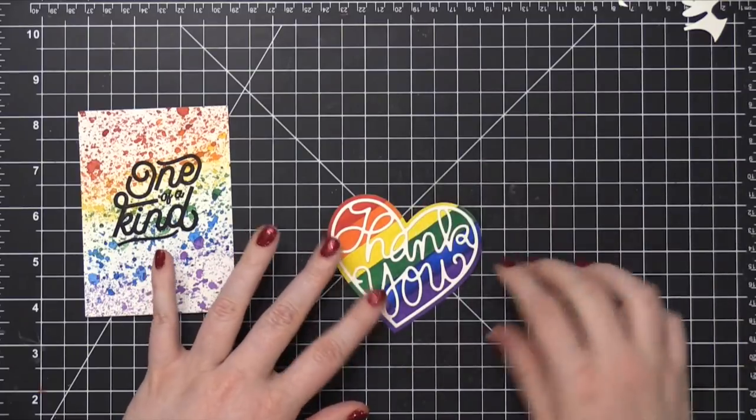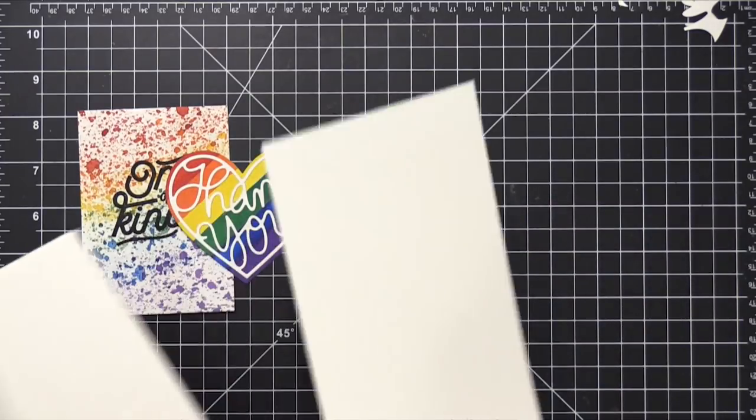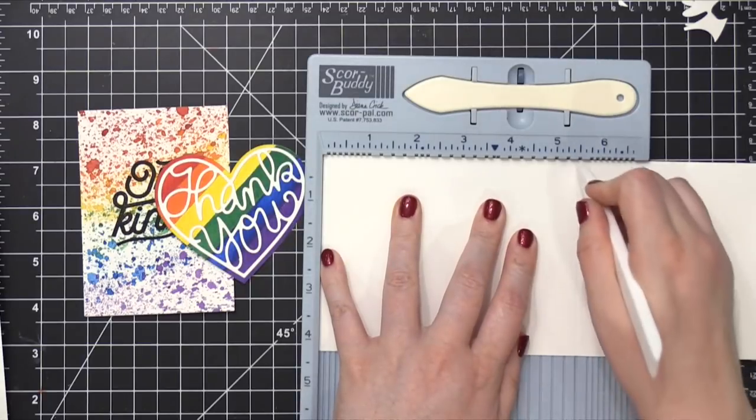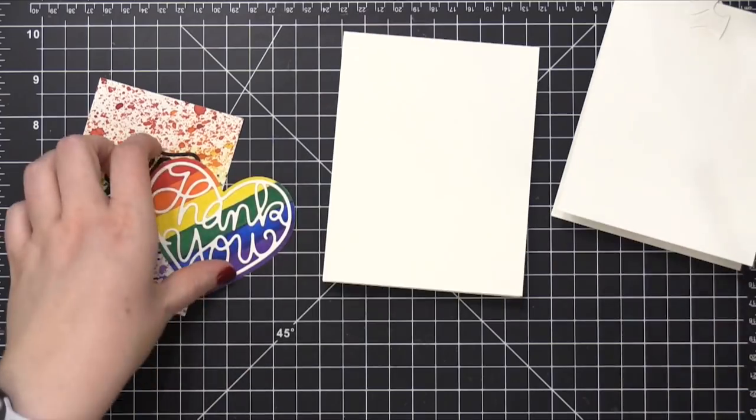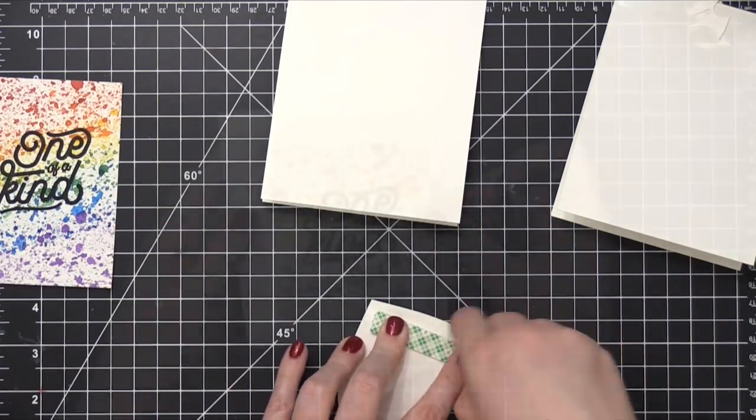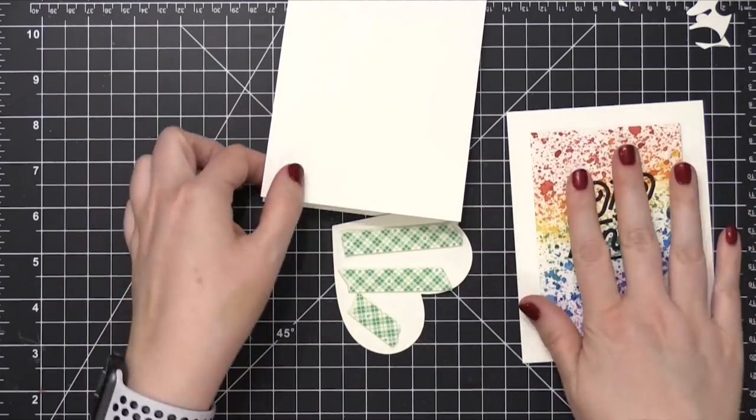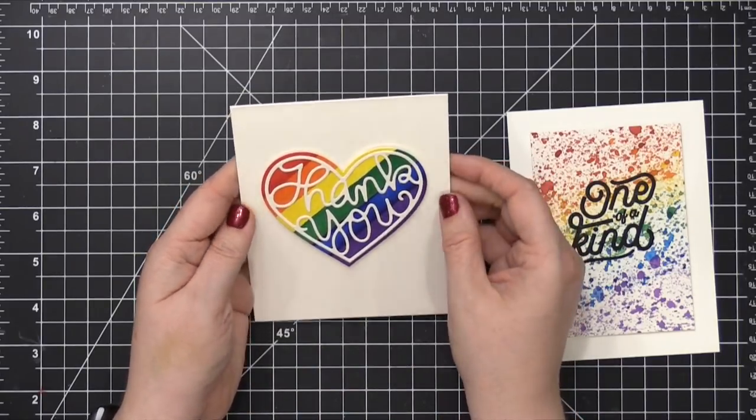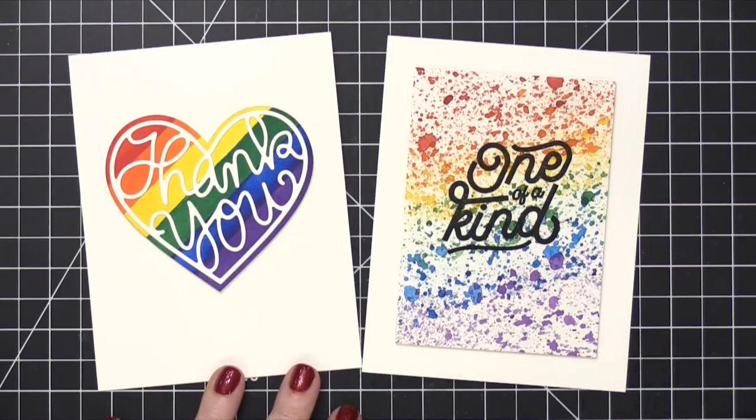The good thing about the Gina K Connect Glue is that it does dry clear. So anything that kind of squishes out should dry clear. I'm going to use white card bases. These are going to be Neenah Classic Crest Solar White 110 pound card bases scoring at five and a half. And then I'm going to use some foam tape to adhere these onto the card bases. And these are going to be really, really simple cards. I'm not doing a whole lot to them. All right, there's one card. And then the other, which is going to be a super simple one. There we go. There are the cards for today. Two very simple watercolor rainbow backgrounds. Hope you guys enjoyed both of these.